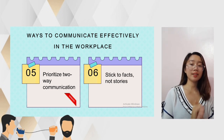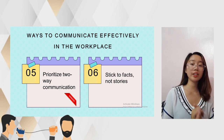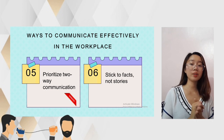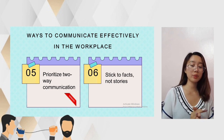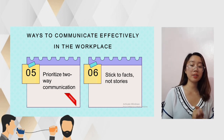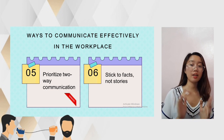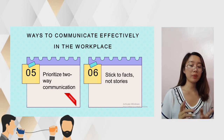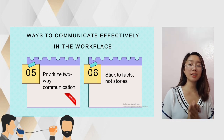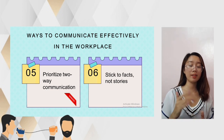Sixth, we must stick to facts, not stories. According to Diana Chapman, facts are the things that have actually happened — things that everyone in the room would easily agree on. A story, on the other hand, is our own interpretation of the situation. Hence, we must separate these two to avoid miscommunication or misunderstanding within the group.